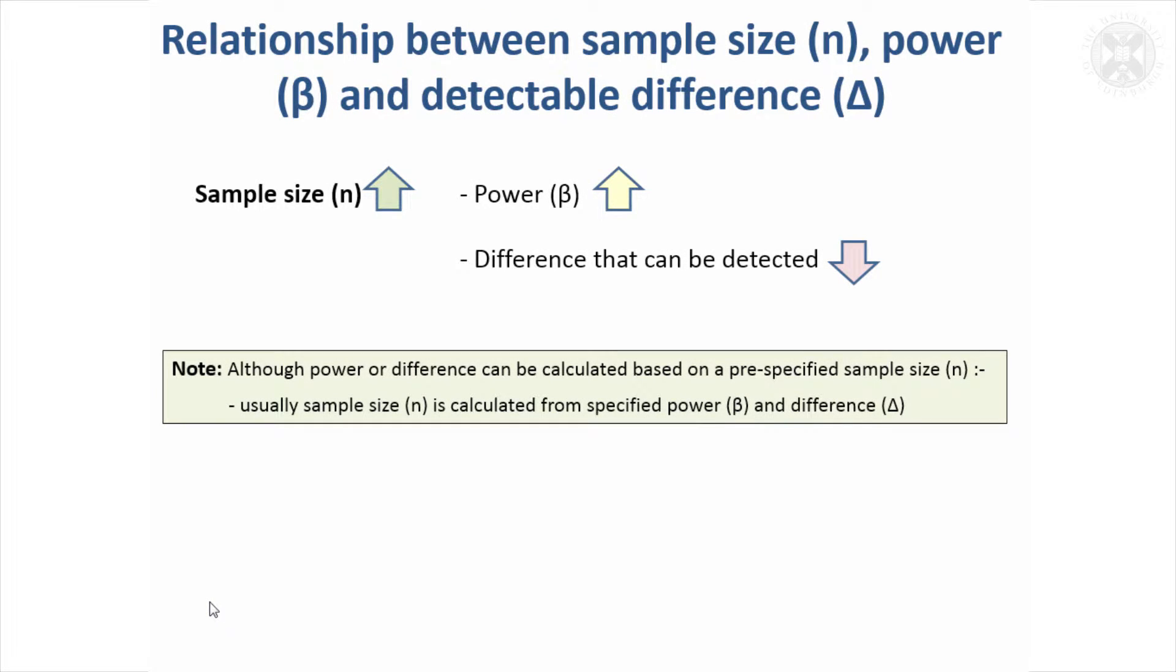This slide summarizes the relationship between sample size, power, and the difference that can be detected. The bigger the sample size, the more power it gives you and the smaller the difference between groups that can be detected.